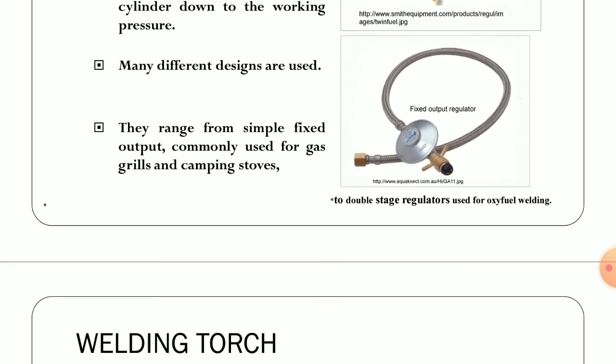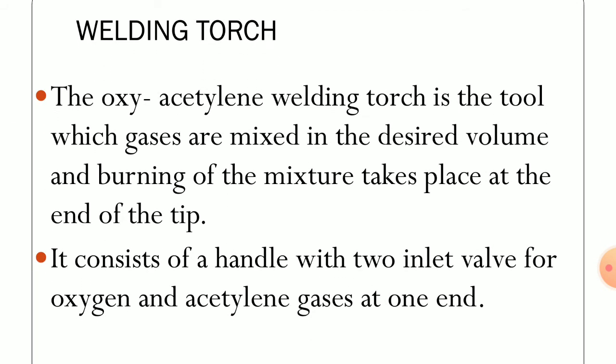Now we will start discussing the welding torch in more detail. The oxy-acetylene welding torch is the tool in which gases are mixed in the desired volume, and burning of the mixture takes place at the end of the tip, which we generally call the nozzle. The flame emerges out of the nozzle with ignition from a spark. It consists of a handle with two inlet valves for oxygen and acetylene gases at one end.